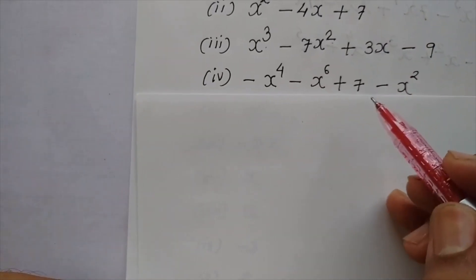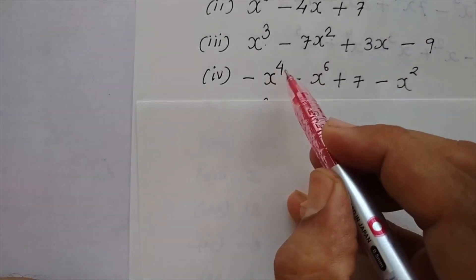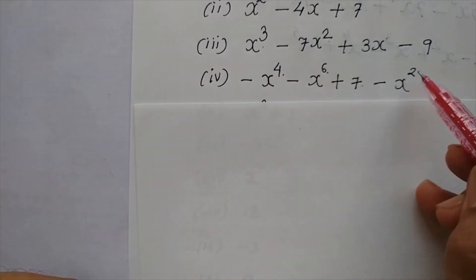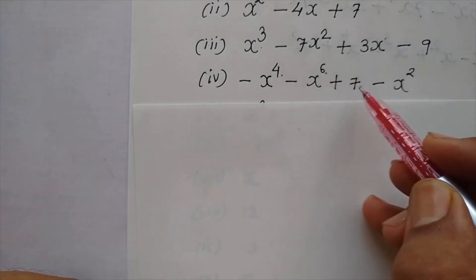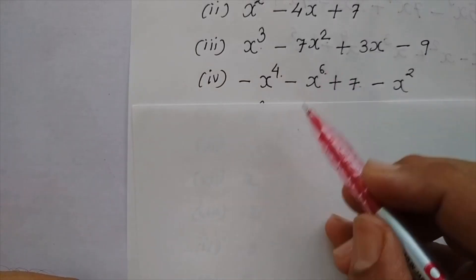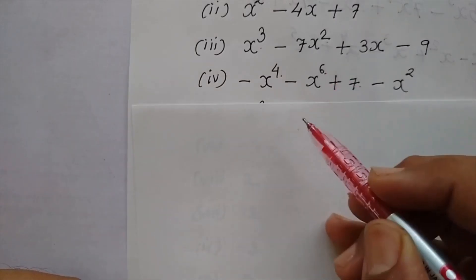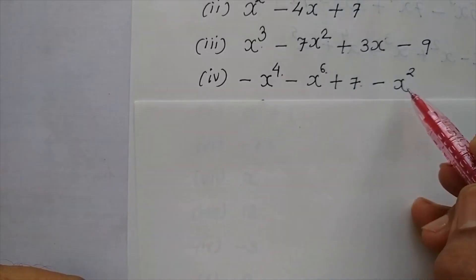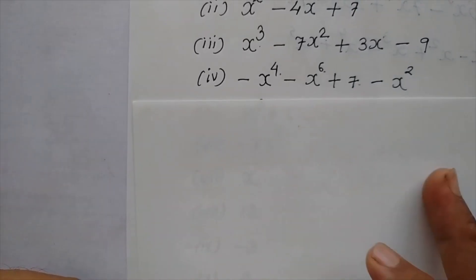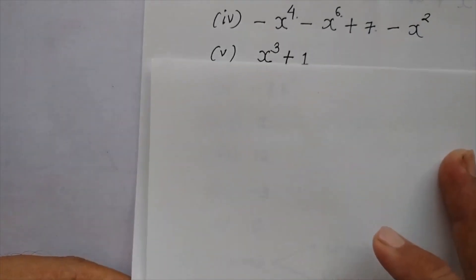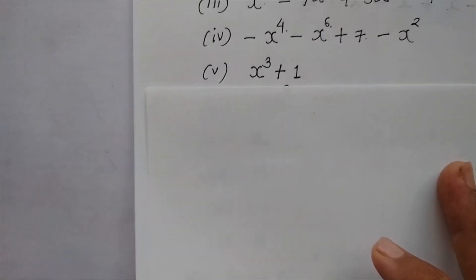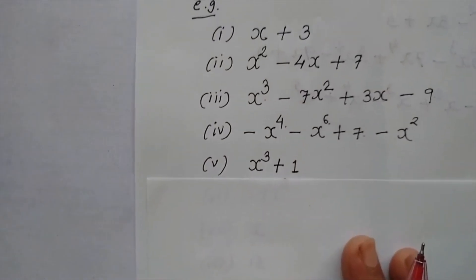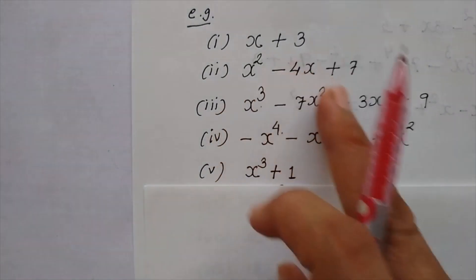So children, let us begin our work. Children, first one, this is x plus 3. This is one example of polynomials. Let us take another example, x square minus 4x plus 7. Third example, x cube minus 7x square plus 3x minus 9. Let us take a few more examples. Here also 4 is first, then 6, then 7, then minus x square. Here the x cube term is not there, x phi term is not there, even though this is an example of polynomial.